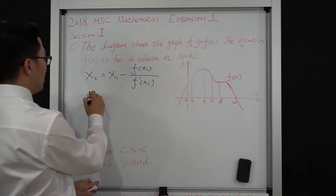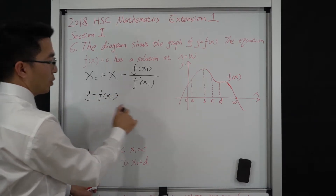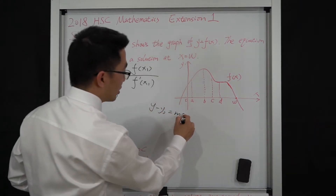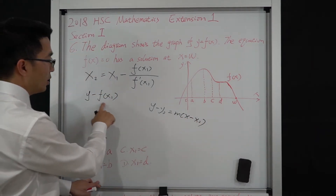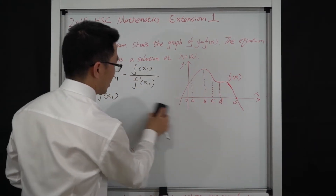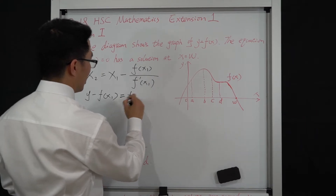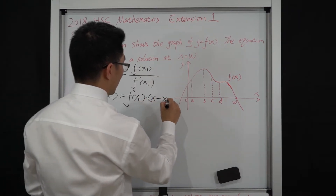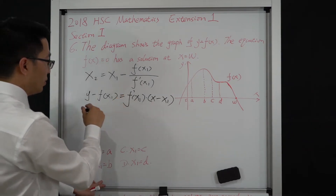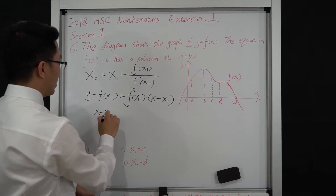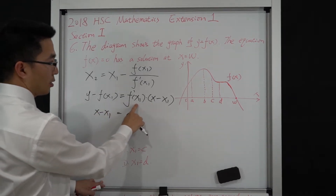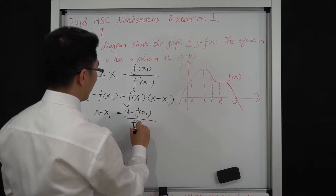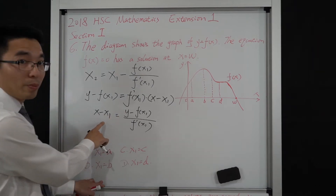The equation for the tangent line would be y equal to f(x₁). We use the formula: y₀ equal to the gradient times (x minus x₀). So here we have f(x₁) equal to the differentiation of the function at x₁ — that is the gradient of the function at x₁ — times (x minus x₁). Rearranging, we get x minus x₁ equal to y minus f(x₁) divided by the differential of the function at x₁.